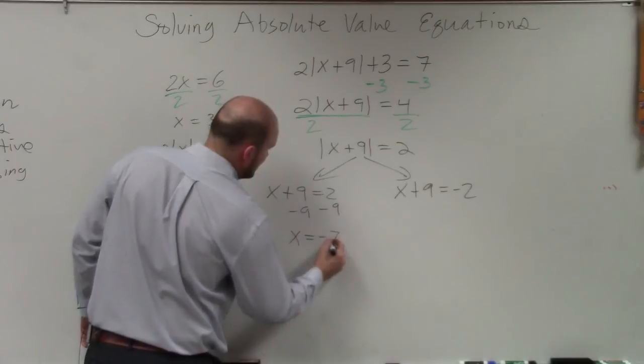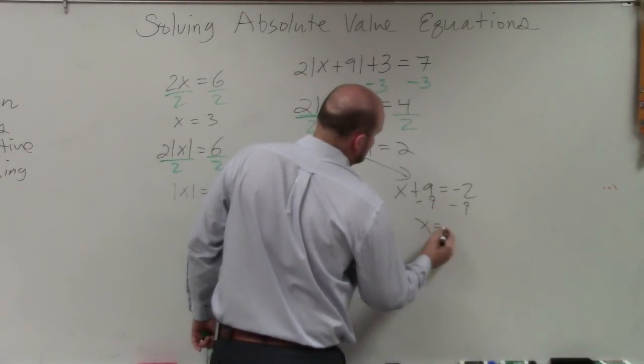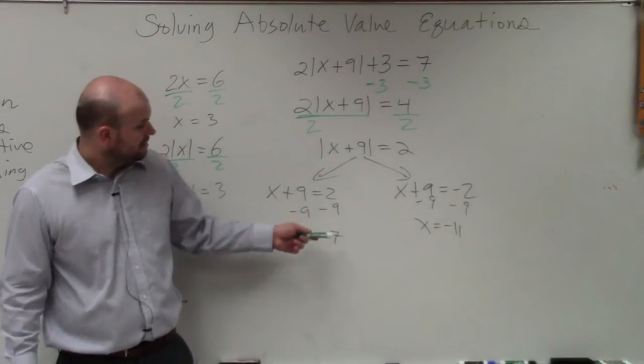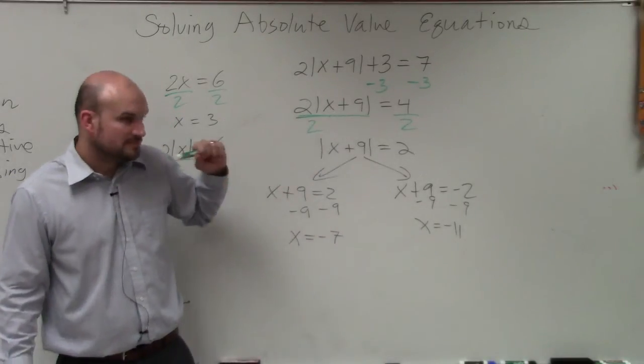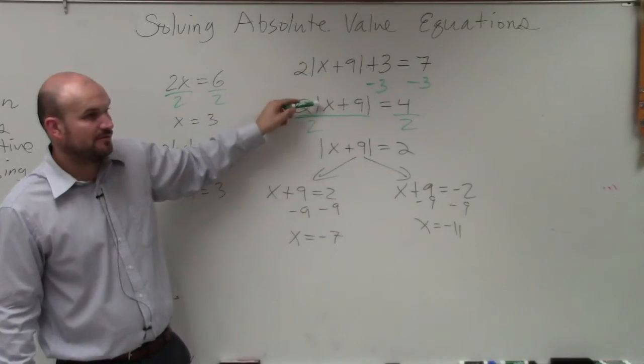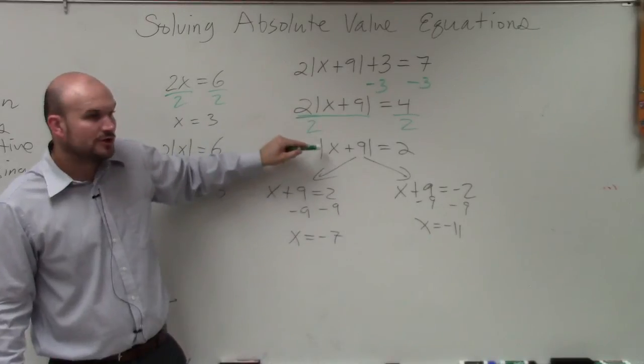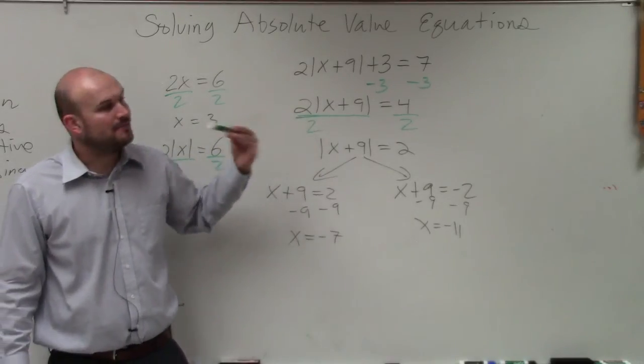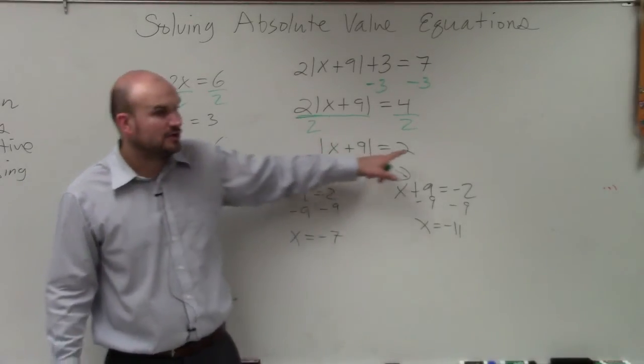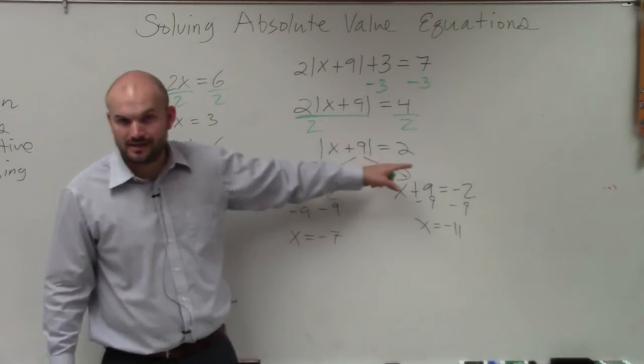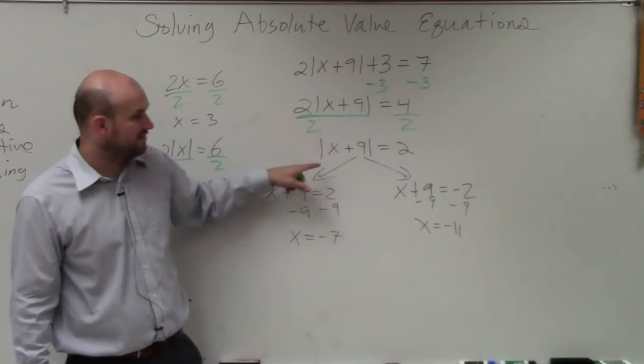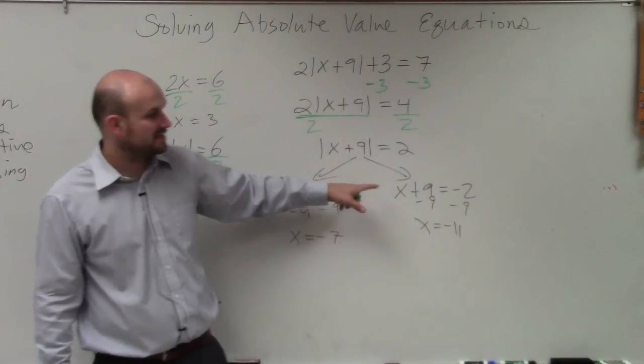x equals negative 7. x equals negative 11. Now we go back and check our answer. So which equation do you do? Do you go back to the original, the one where you undid the subtraction, or this one? In reality, it doesn't matter. My recommendation is to always go back and plug in your answers into the equation when your absolute value is isolated. So if you have an original problem where it's not isolated, use the equation to check your answer of the one that's isolated.